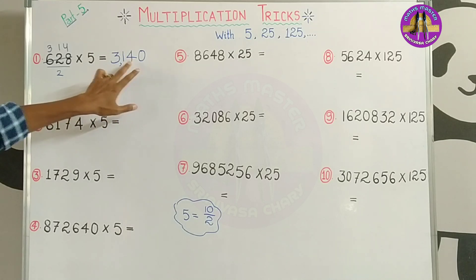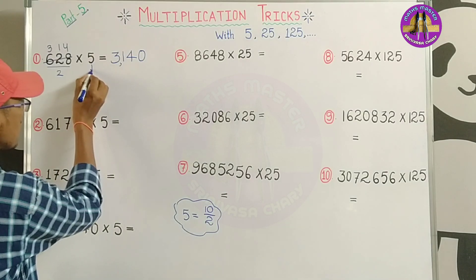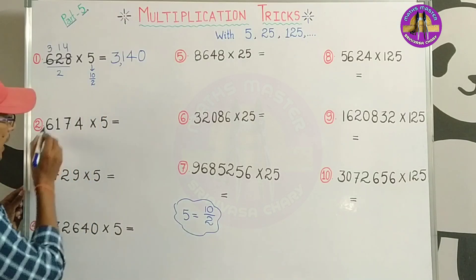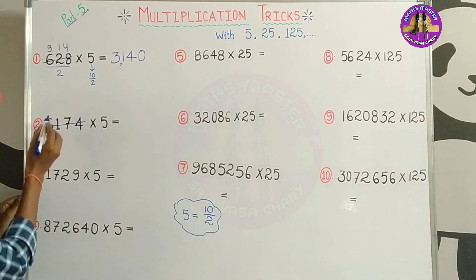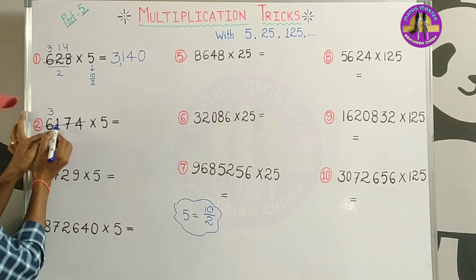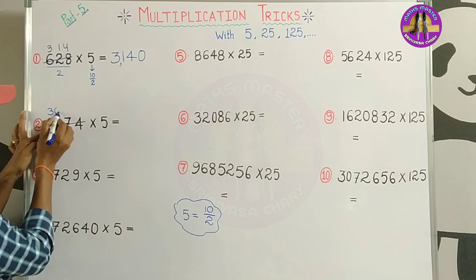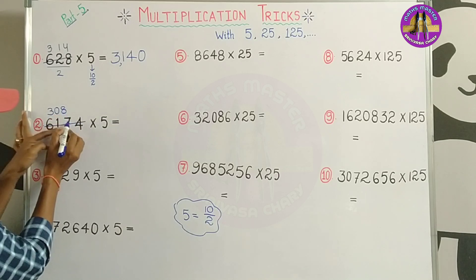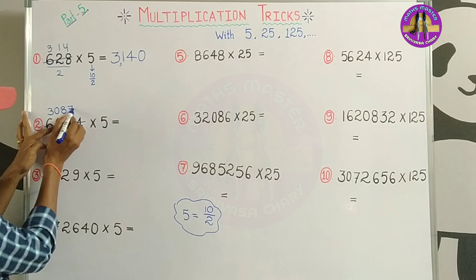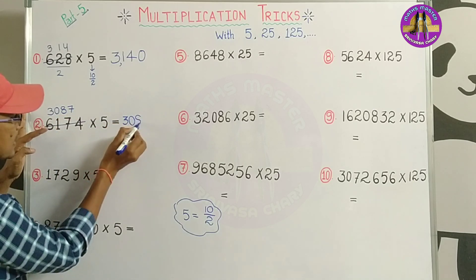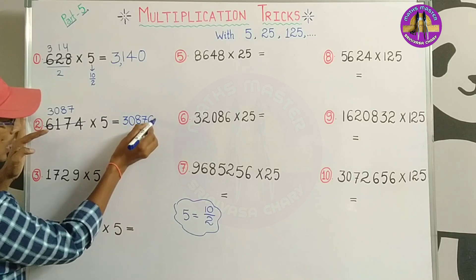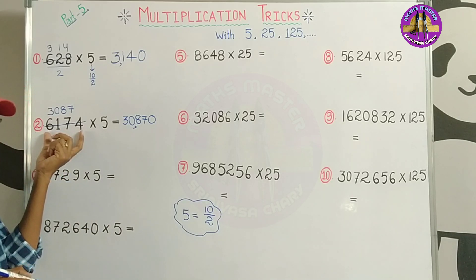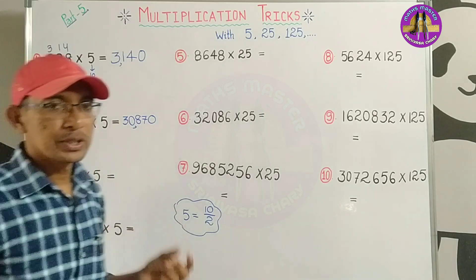We will do the same — divide by 2. 2 threes are 6, 1 five gives 0. So the answer is 3,087, that means 30,870. So the answer is 30,870.